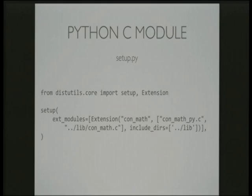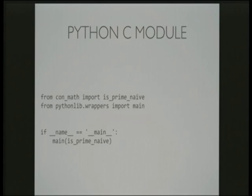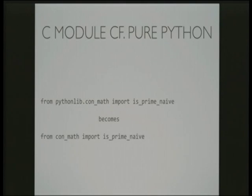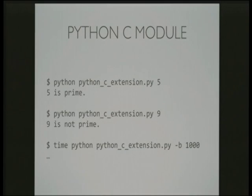You then need to make a setup.py file that tells it how to build — you specify what C files to compile, where to find the libraries, and so on. Then you write your Python script called from the command line, which brings in the new is_prime_naive function. It looks similar to the previous Python implementation — the only change is that instead of importing is_prime_naive from pythonlib.conmath, you're bringing it straight out of conmath, which is the C version. Because it uses the same main function, the interface is identical.